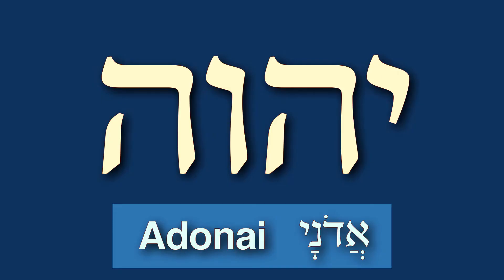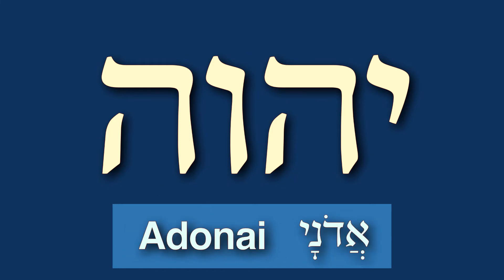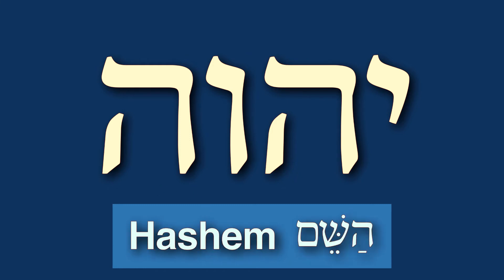Yod-He-Vav-He — we call Him Adonai. This is how Adonai is written. This name is actually not pronounced as written; we look at the name and say Adonai. Jews also say Hashem. We'll talk about the actual pronunciation, or possible pronunciations, of the name in a separate video. But you can say Adonai and you can say Hashem.